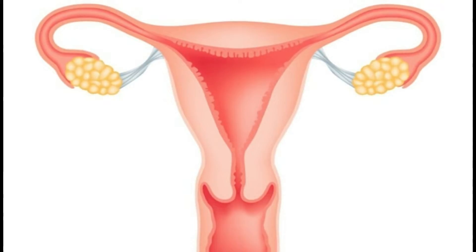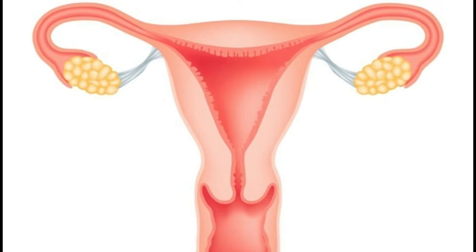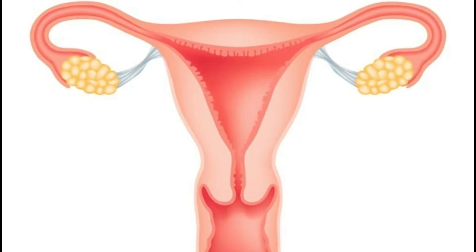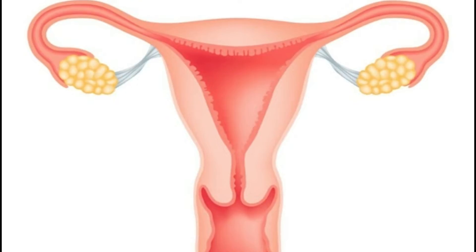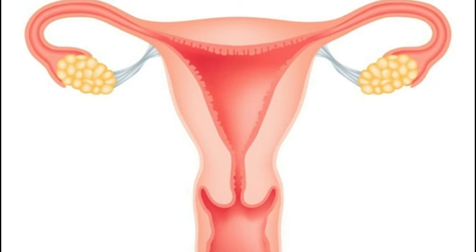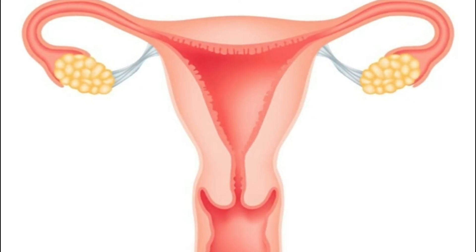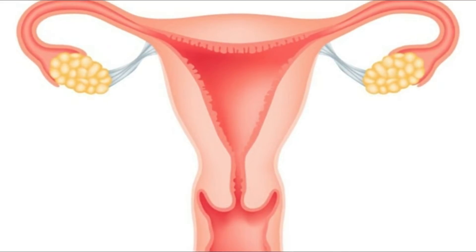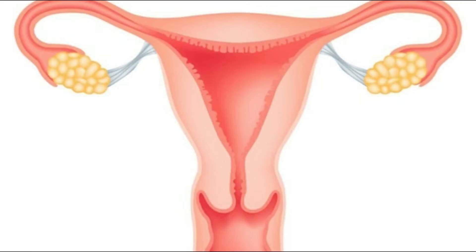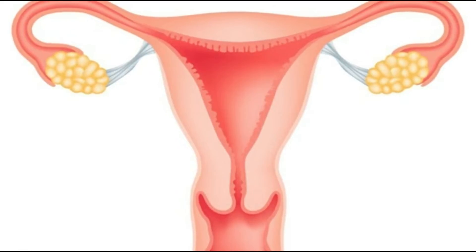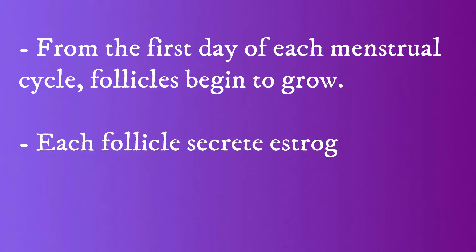Beginning from the first day of each menstrual cycle, a few follicles begin to grow. Each of these follicles secretes estrogen into the bloodstream, which helps prepare the uterus for possible pregnancy.